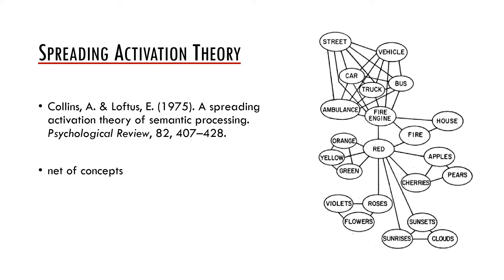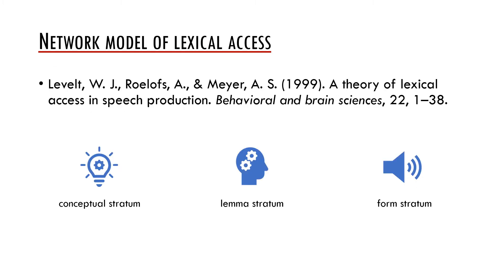The idea of spreading activation can account for example for certain systematicity of word associations or for the process we call semantic priming, which we will talk about later. One of the problems of the model of mental lexicon proposed by Collins and Loftus was that it was solely interested in semantics.